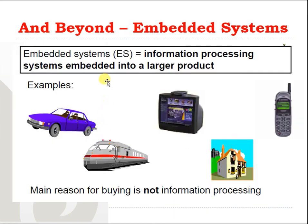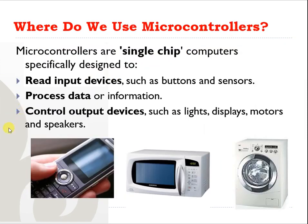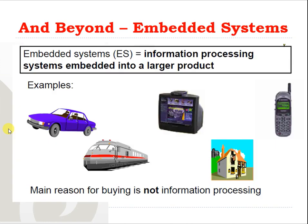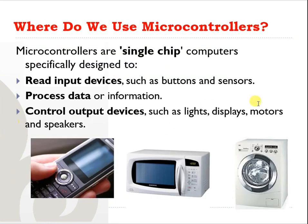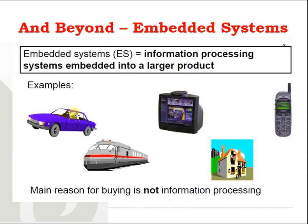Moving one step forward, we have embedded systems. Embedded systems are information processing systems embedded into a larger product such as a train or a car. In this case the main reason is not just processing information but performing some physical activity. Embedded systems are the topic for another course, so we won't discuss them further here.